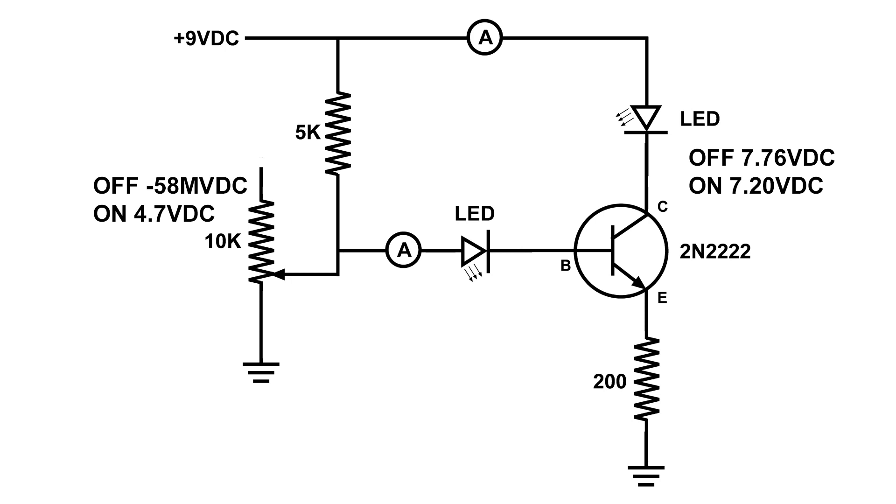To 7.20 volts. And that's because the transistor is conducting, or another way to look at it, the transistor has turned into a variable resistor. I also took measurements of the current.